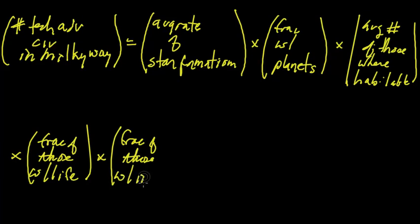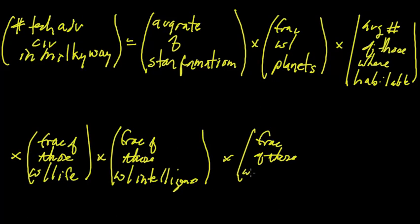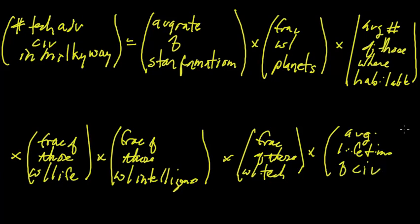Multiplied by the fraction of those where intelligence arises, multiplied by the fraction of those with technology, times the average lifetime of a technologically advanced civilization. How long do they last?